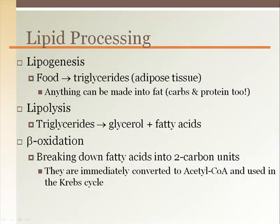Because triglycerides are such an important source of energy, the formation, breakdown, and use of these are discussed. Lipogenesis is the formation of triglycerides from food, primarily for storage. Lipolysis is when triglycerides are broken down into free fatty acids and glycerol molecules to be used as energy. Beta-oxidation is how we get the fatty acids to convert to acetyl-CoA for use in the Krebs cycle.